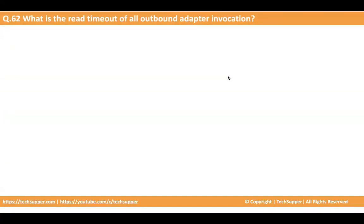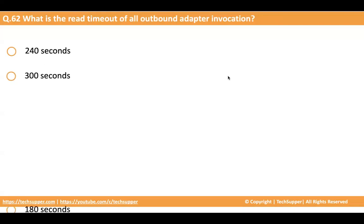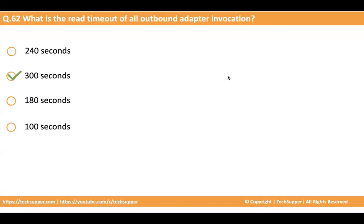The next question is: what is the read timeout of all outbound adapter invocations? The options are 240 seconds, 300 seconds, 180 seconds, and 100 seconds. Note the distinction — the previous question was about connection timeout, and this question is about read timeout. The answer is again 300 seconds, which is equivalent to 5 minutes. If the external invocation does not read the data within 5 minutes, your integration will fail.